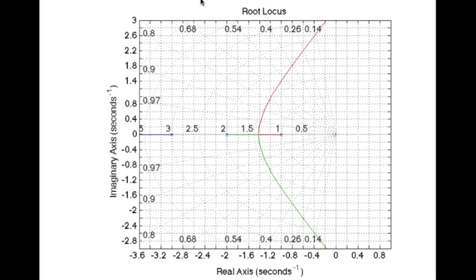That is the root locus of our plant. The plant is the same as the loop transfer function here. Note that you always draw the root locus of the loop transfer function. Now for the given transient requirement, rise time equal to 0.9 seconds, we get omega n equal to 2. That is the curve omega n equal to 2.